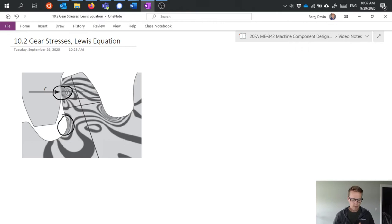The Lewis equation makes a few assumptions. First it assumes that the full load being transmitted between the gears is applied at the tooth tip of the gear, and that's not really that accurate of an assumption. It typically doesn't happen that the full load would be applied at the tip.